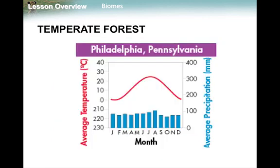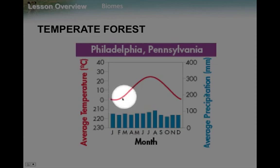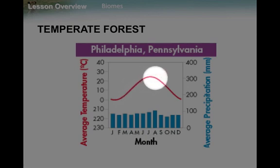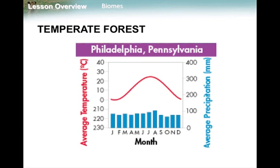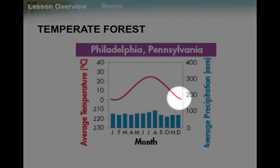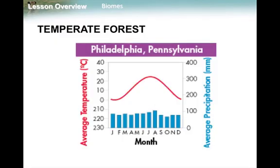This one should look a little more familiar — it is our biome, although it says Philadelphia. That is in the same latitude as us and they have a very similar biome. You'll notice a clear winter in January through May, then spring warming up in April and May, summer in June, July, August, and fall in September and October, then back into winter in November and December. Very clear seasons — that's why we call it temperate. If you look at our precipitation, it is fairly consistent. We don't get rain in winter, but we often get snow, and you have to remember that snow is precipitation.